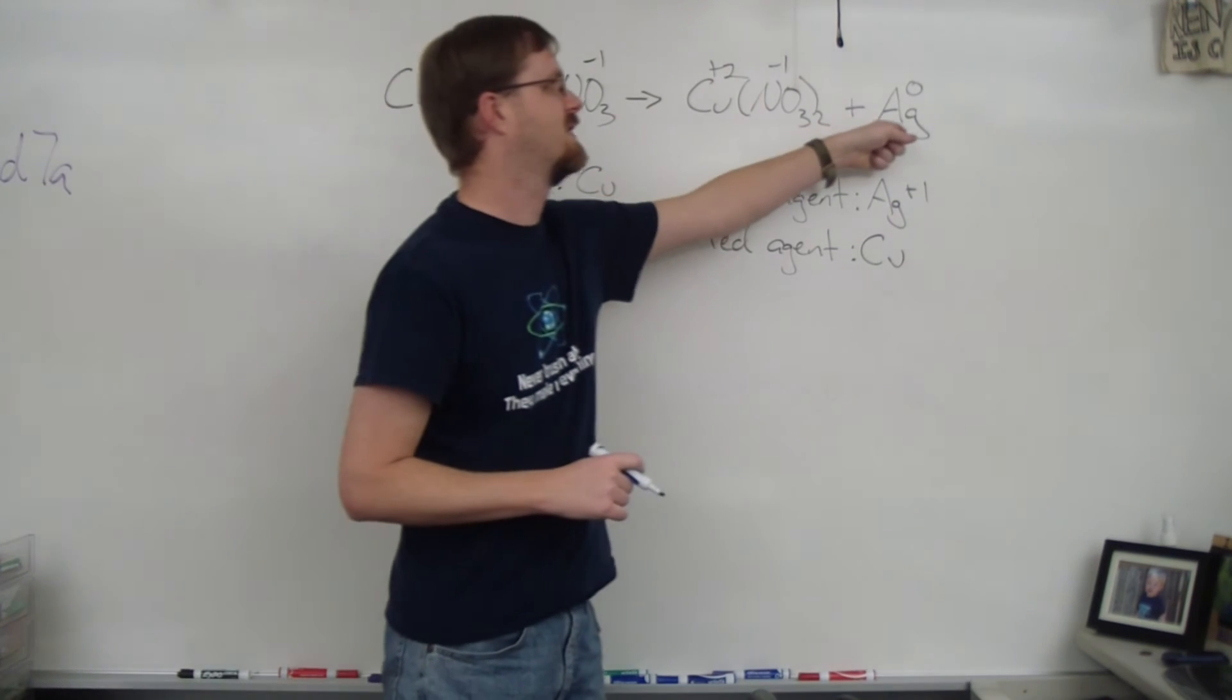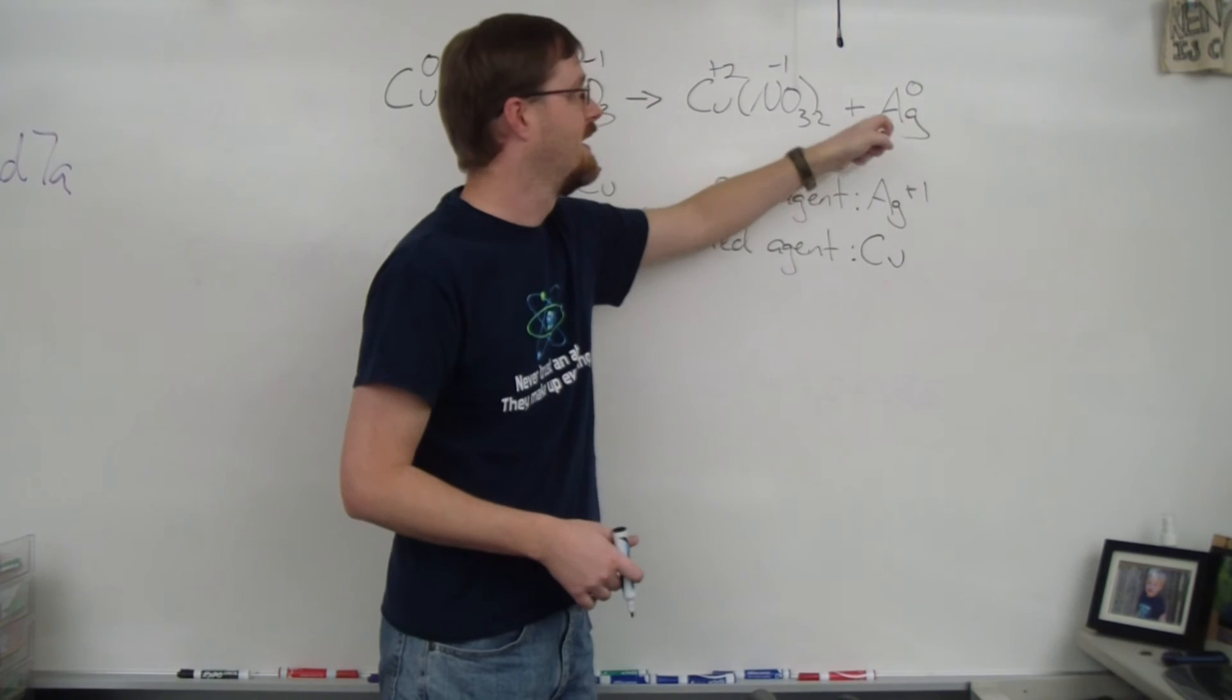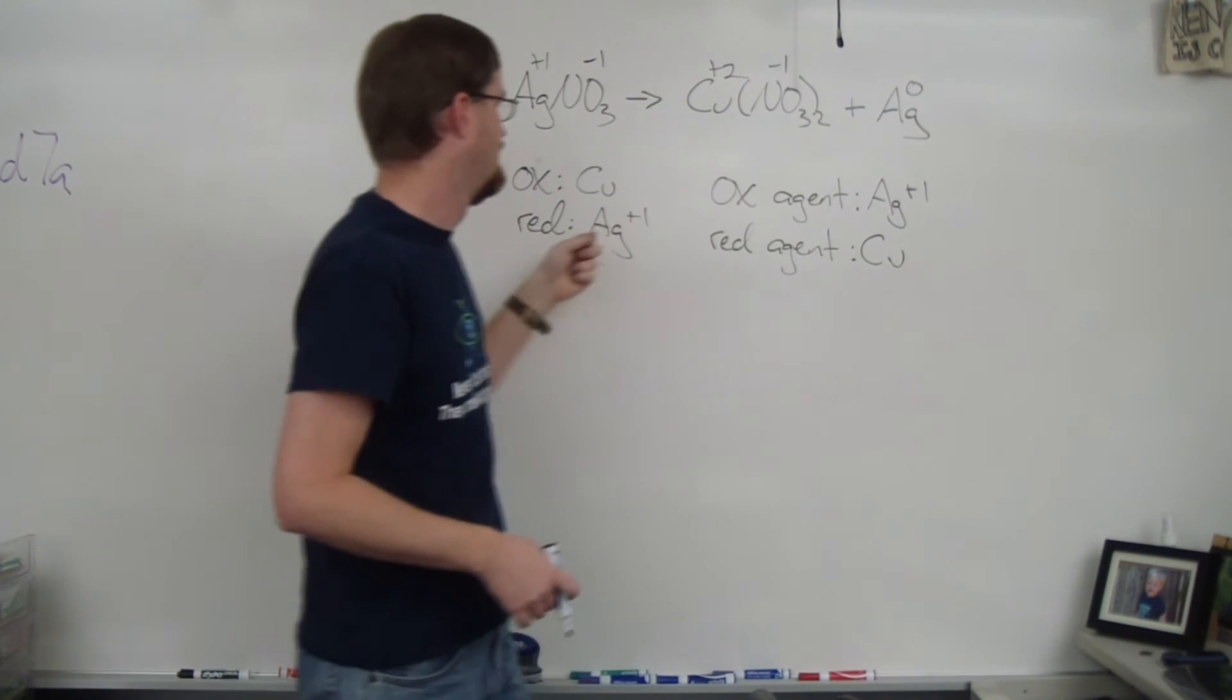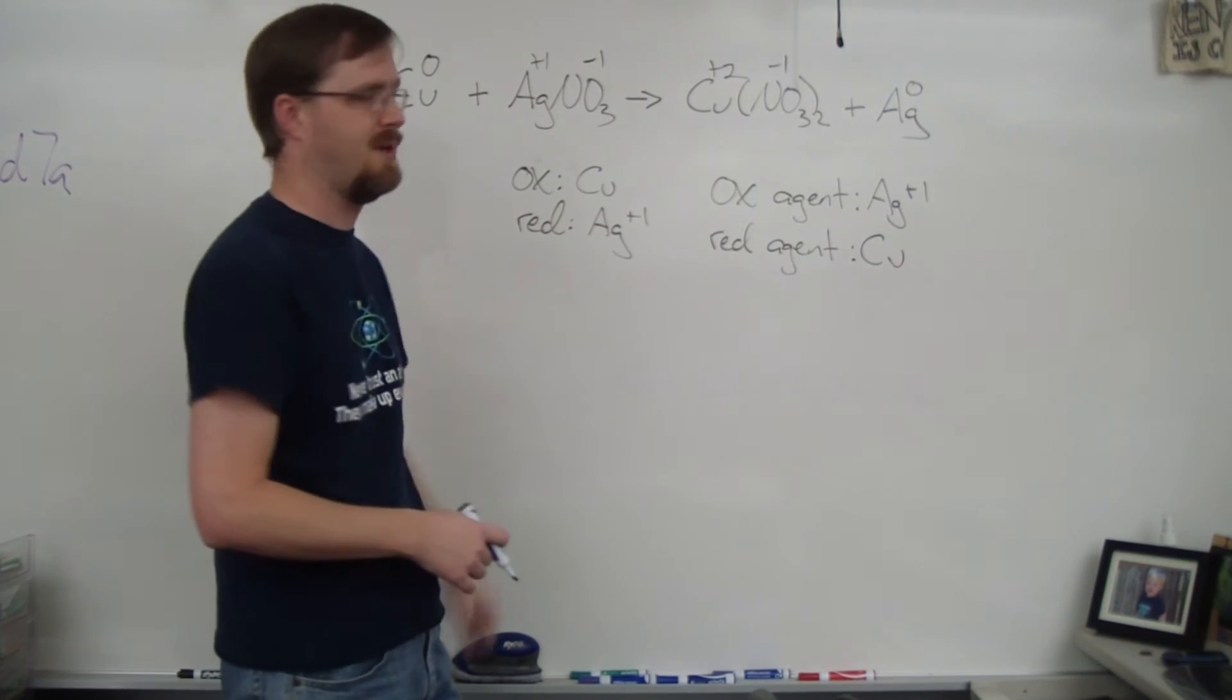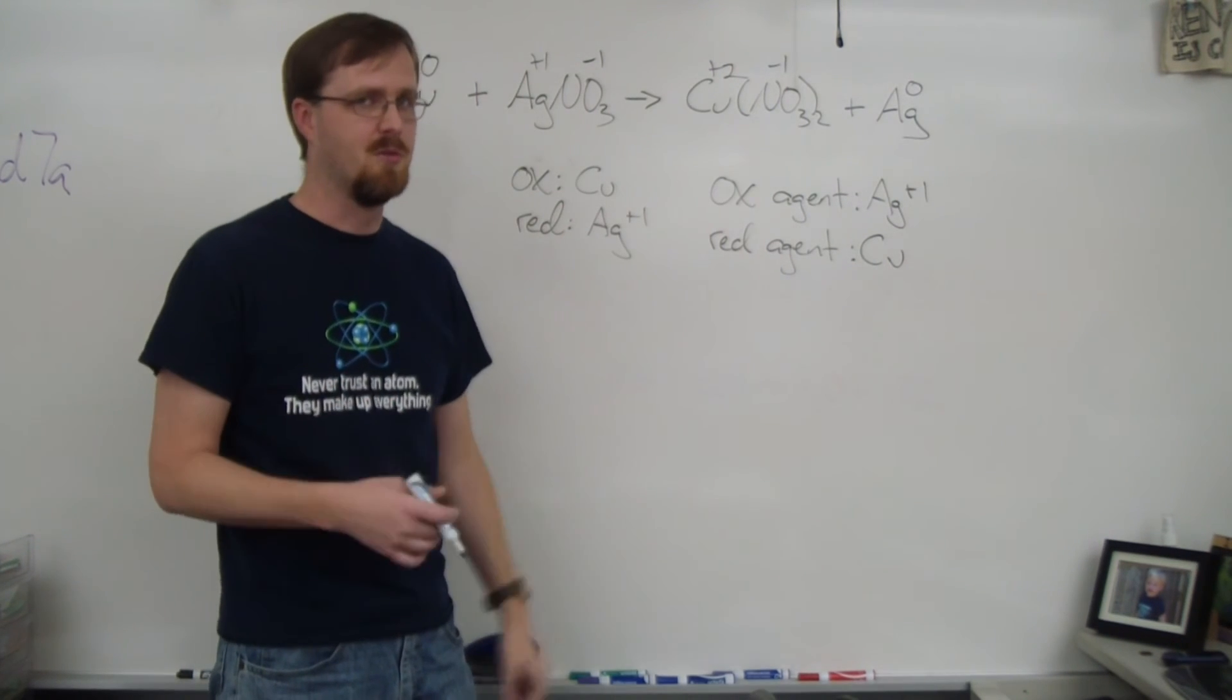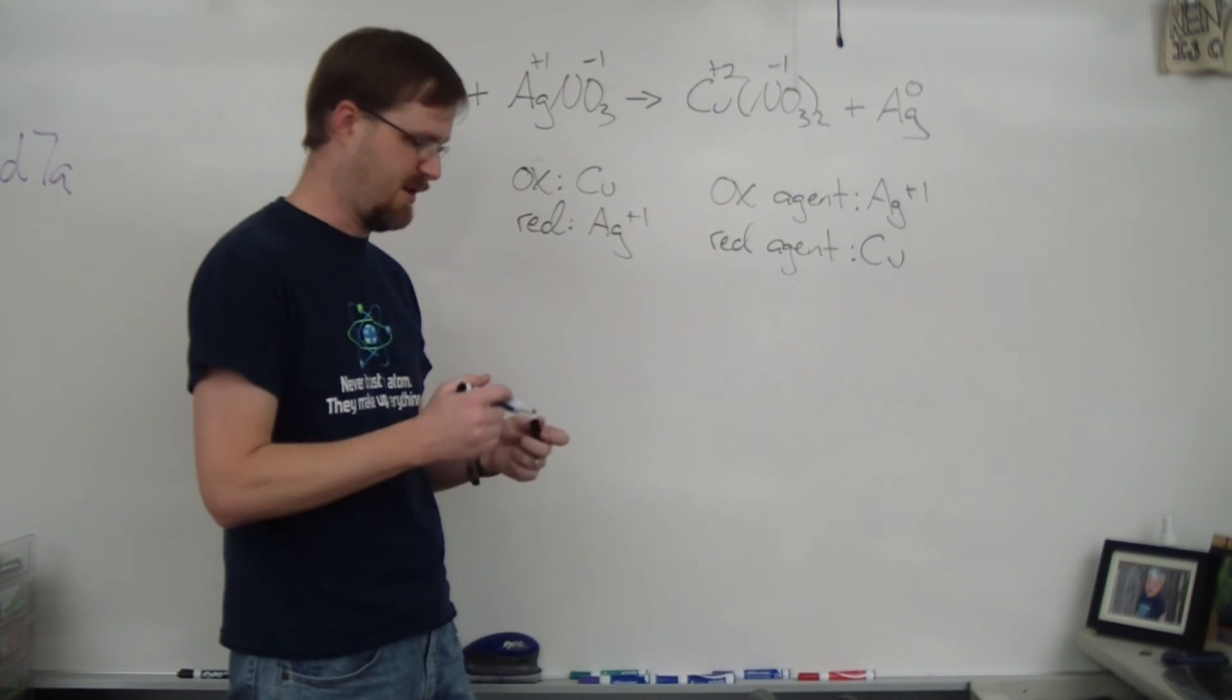You look on the product side: what's being purified, what's the one being put all by itself? In this case, it is silver. So silver is the one being reduced and the other metal is the one being oxidized. That's also a quick way to identify what is oxidized and what is reduced.